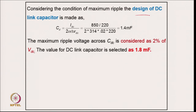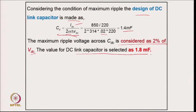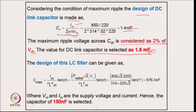For the output DC link capacitor, the design is based on C_d = I_dc / (2 × ω × ΔV_dc), where ΔV_dc is 2 percent of the output voltage. This gives 1.4 mF. The maximum voltage ripple across C_dc is considered 2 percent of V_dc, so the capacitor is selected slightly higher at 1.8 mF to ensure ripple never exceeds 2 percent.